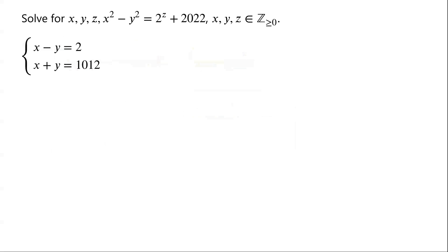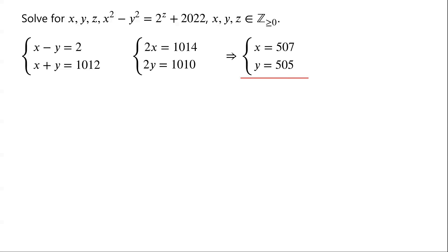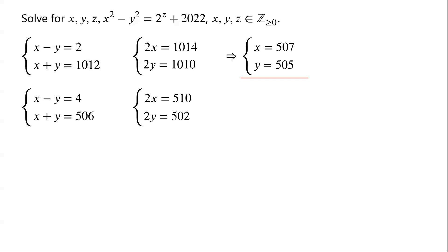For x minus y equals 2 and x plus y equals 1012: adding gives 2x equals 1014, subtracting gives 2y equals 1010. So x equals 507, y equals 505. For x minus y equals 4 and x plus y equals 506: adding gives 2x equals 510, subtracting gives 2y equals 502. So x equals 255, y equals 251.